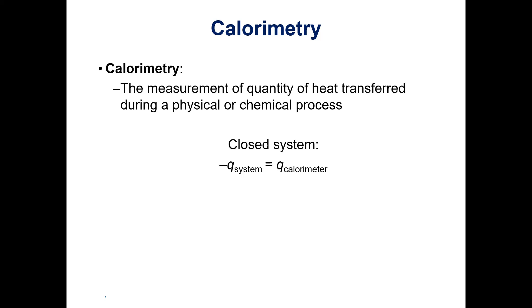We can use the idea of energy transfer being equal and opposite along with the Q equals mcΔT calculations. We can measure how much heat is gained by our calorimeter and know that the same amount of heat must have been lost by the system, or vice versa. This process lets us figure out how many joules of heat are transferred during a specific process.